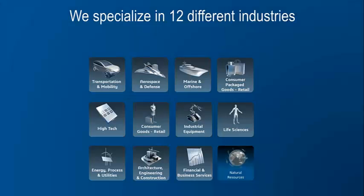Several years ago, Dassault Systèmes changed its approach to the market. What drives us is the industry. Our strategy and solution roadmap is defined based on specific industry requirements and trends. Our technology serves the specific customer process as we understand it today, and it can change based on emerging IT capabilities. We cover 12 industries. Industry organisations are in charge of defining 3DS strategy and building the solution roadmap, and are also responsible for supporting key customers. Industrial equipment is one of the key industries for Dassault Systèmes.